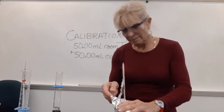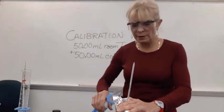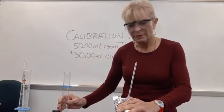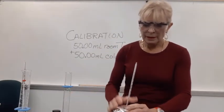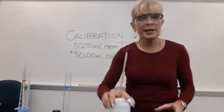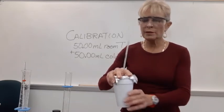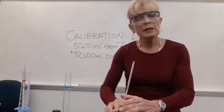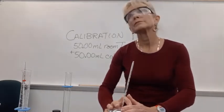Let us first pour in 50 milliliters of room temperature water for this calibration. Okay, we let that settle a bit, swirl around, and read the thermometer to the tenth of a degree.